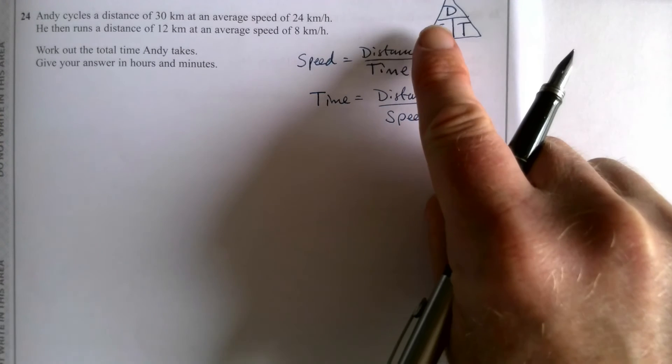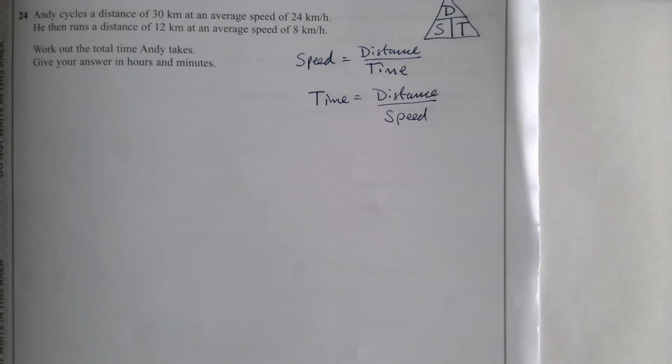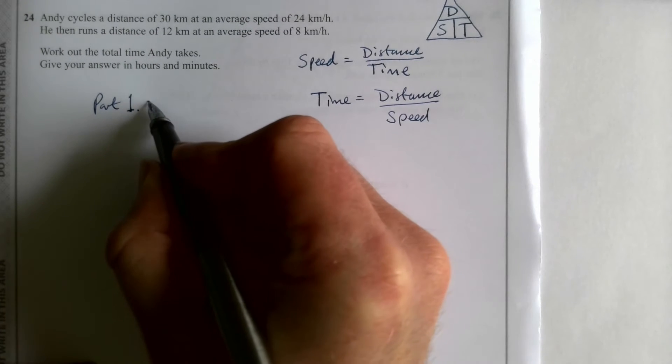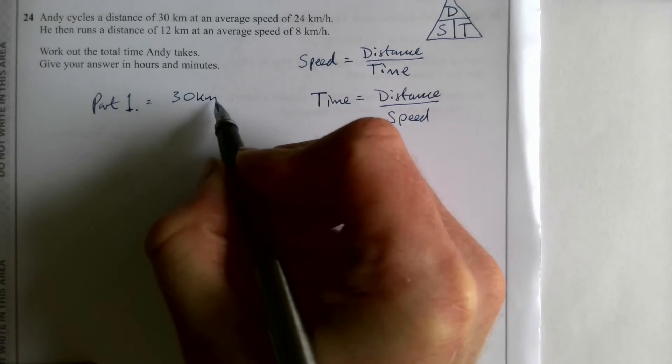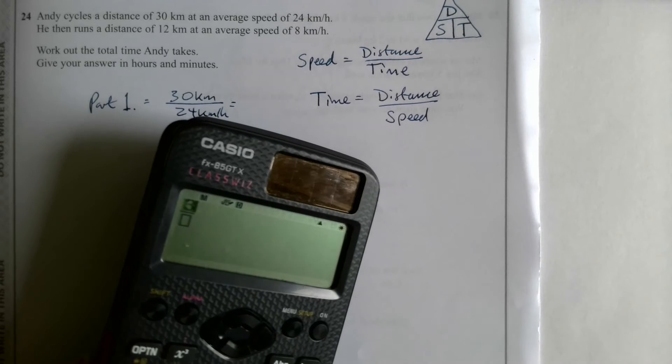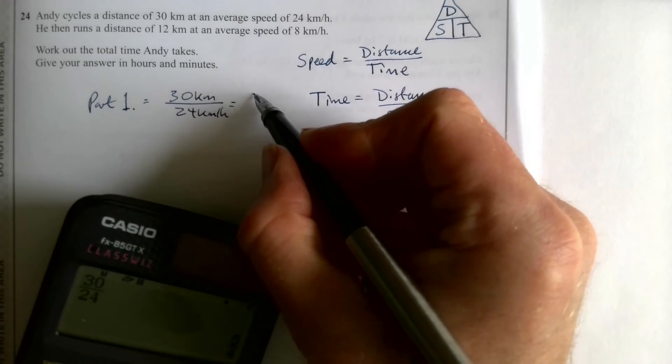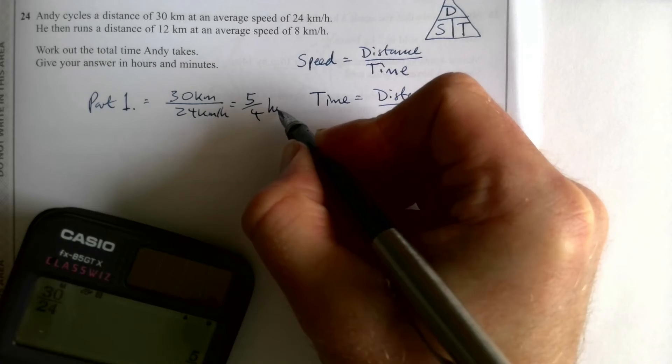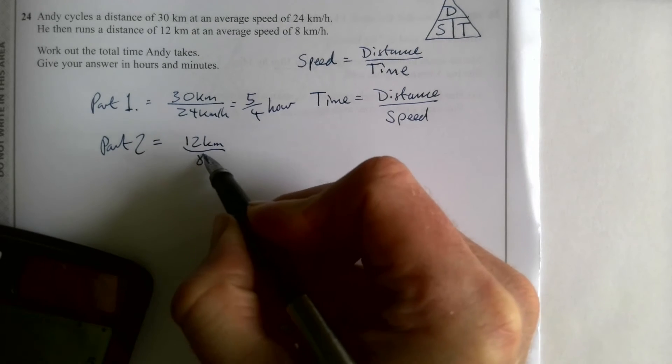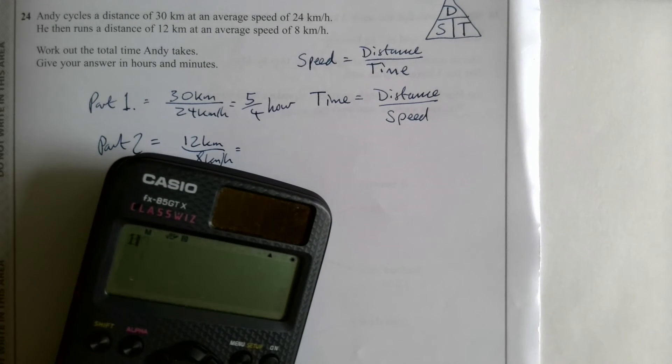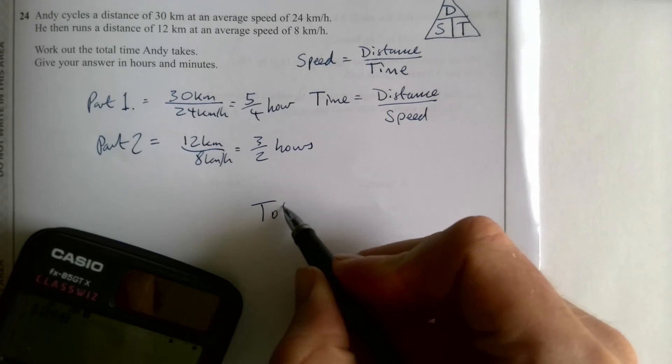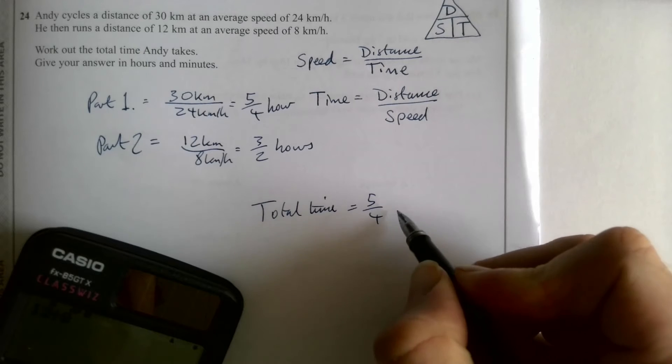So I want time, it's distance divided by speed. If I wanted distance, it's speed times time. If I wanted speed, it's distance divided by time. So we want time, that's distance. So for the first part, the distance is 30 kilometers at a speed of 24 kmh. And if you do 30 over 24 in your calculator, you get 5 quarters. So let's just leave it as that for now. 5 quarters of an hour, or an hour and a quarter.